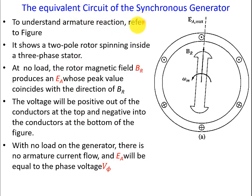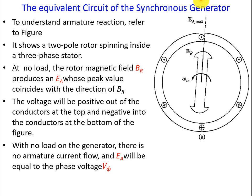To understand armature reaction, refer to this figure, which shows a two-pole rotor spinning inside a three-phase stator. At no load, the rotor magnetic field BR produces EA, which peaks when it coincides with BR. The voltage will be positive out of the conductors at the bottom of the figure. With no load at the generator, there is no armature current flowing, and EA will be equal to V_phase.